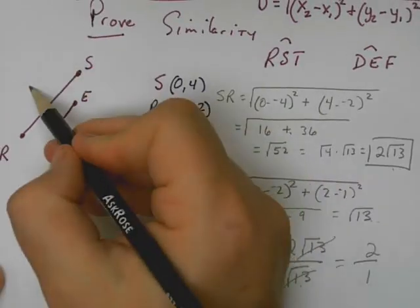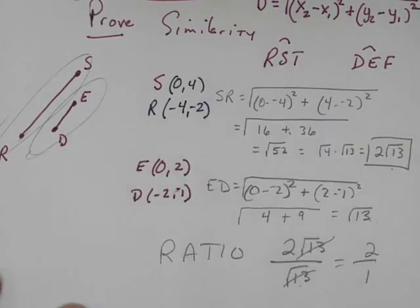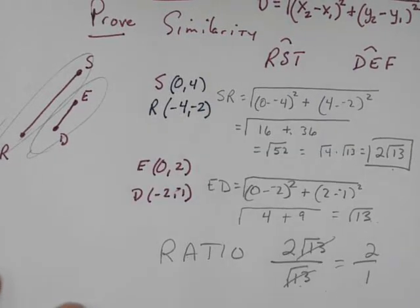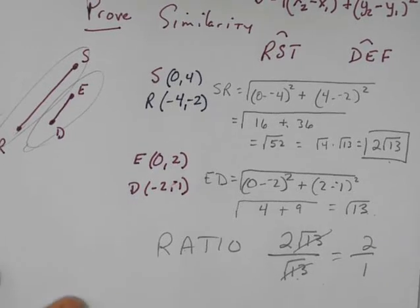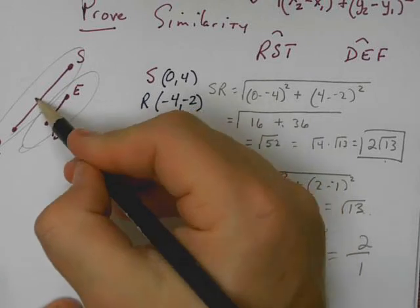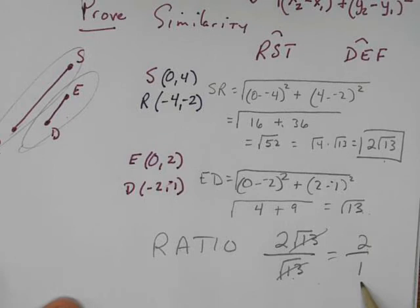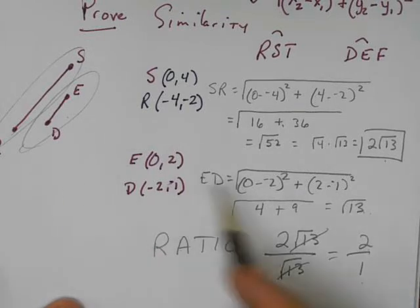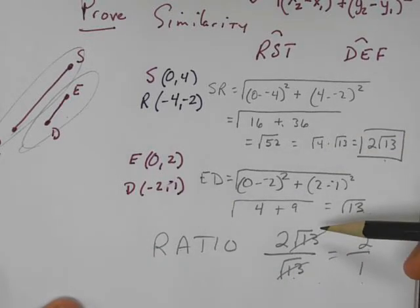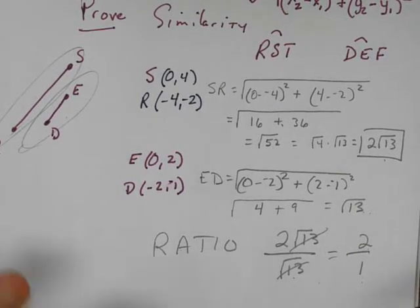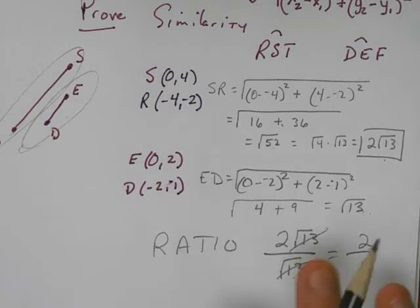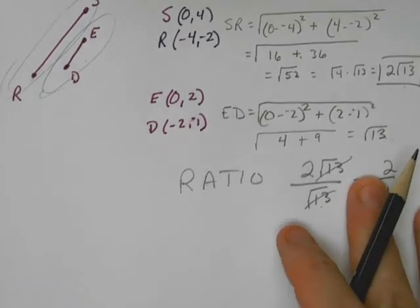Okay, now we just did one pair of sides, right? Technically, on other problems we're getting ready to do, you're going to have to do all the sides. Show that all the sides here and all the sides there are all in the same ratio, because if they're not in the same ratio then they're not similar. Does that make sense? You don't have to use the distance formula on all of the other ones that you're going to have to do.